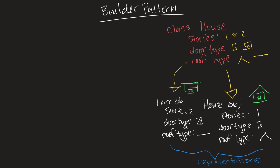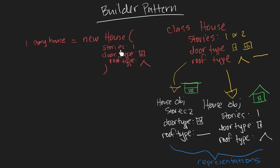Now, how about the construction of an object? If you have a house class, it will have a constructor method. In most languages, constructing a new house would look something like this — the client code is directly calling the house class's constructor method, which is responsible for the construction of one of these objects. Currently, the construction of the object is tightly coupled with its representation, because we're using the house class's constructor method directly.